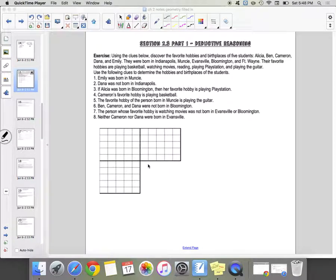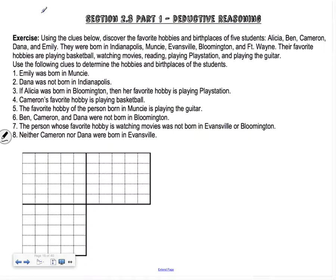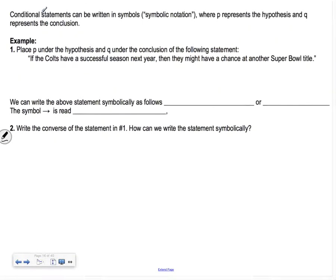Section 2.3 is on deductive reasoning. When we started this section, I had you guys do a little logic puzzle. These are good skills to have when you're in geometry. Using logic is very important in geometry because we have to do things called proofs.